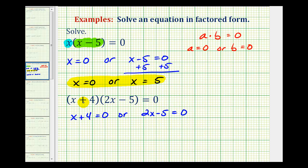Again, meaning the first factor must be zero or the second factor must be zero if this product is equal to zero. So here we'll subtract four on both sides. So we have x equals negative four or here we have to add five to both sides. So we have two x equals five and then divide by two. So we have x equals five halves.